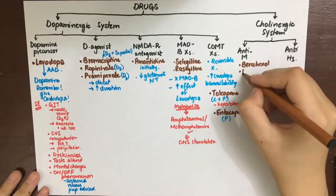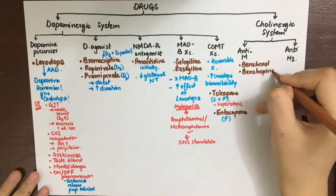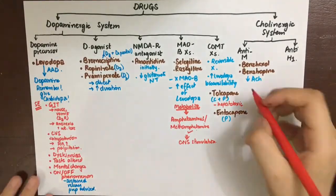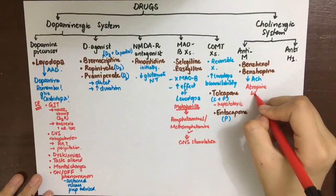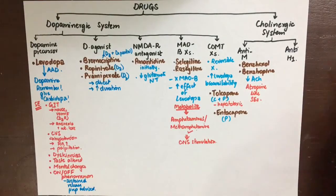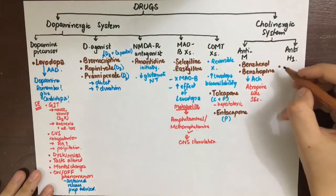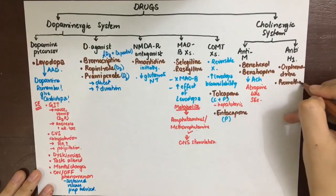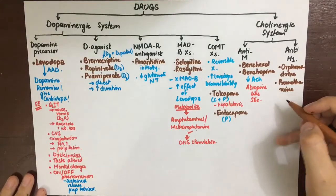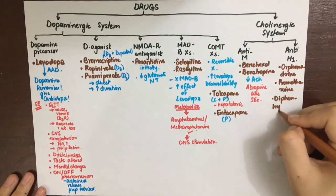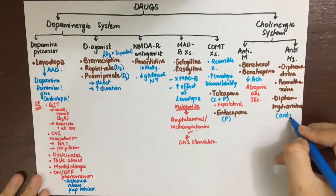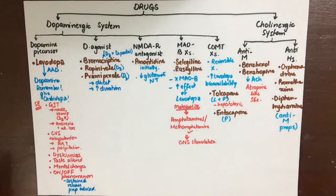Drugs acting on the cholinergic system include anticholinergics — benztropine and procyclidine — which decrease acetylcholine and produce atropine-like side effects such as dry mouth, constipation, and urinary retention. Antihistaminics are used for their anticholinergic properties; the chief drugs are orphenadrine, promethazine, and diphenhydramine.